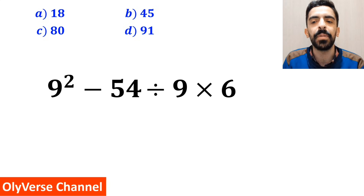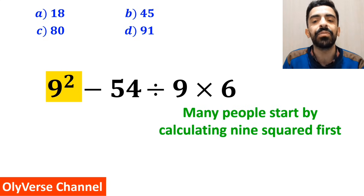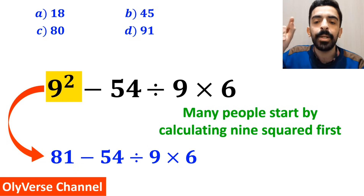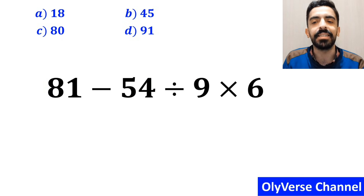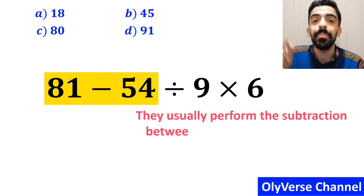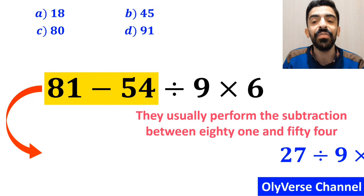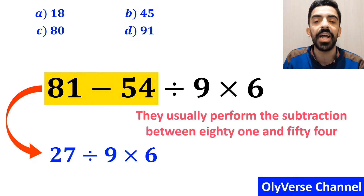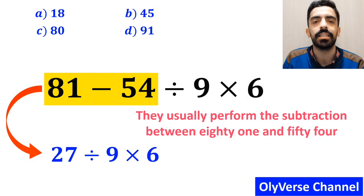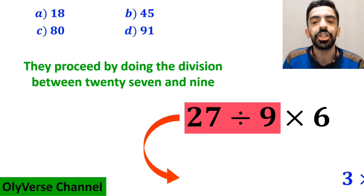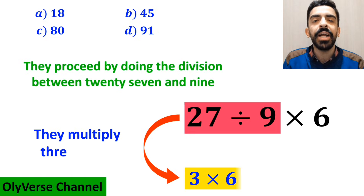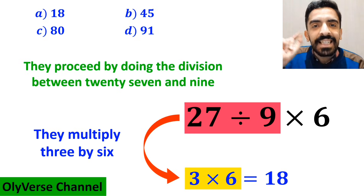To solve this problem, many people start by calculating 9 squared first, and instead of the original expression, they rewrite it as 81 minus 54 divided by 9, then times 6. In the next step, they usually perform the subtraction between 81 and 54, simplifying this expression to 27 divided by 9 times 6. Then they proceed by doing the division between 27 and 9, which gives them 3 times 6, and finally they multiply 3 by 6, ending up with the answer 18.